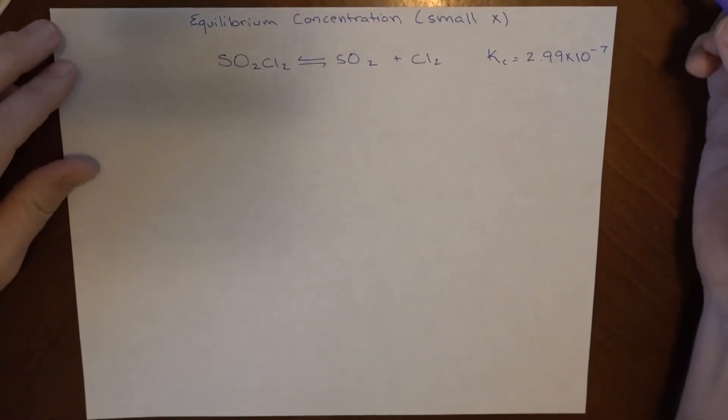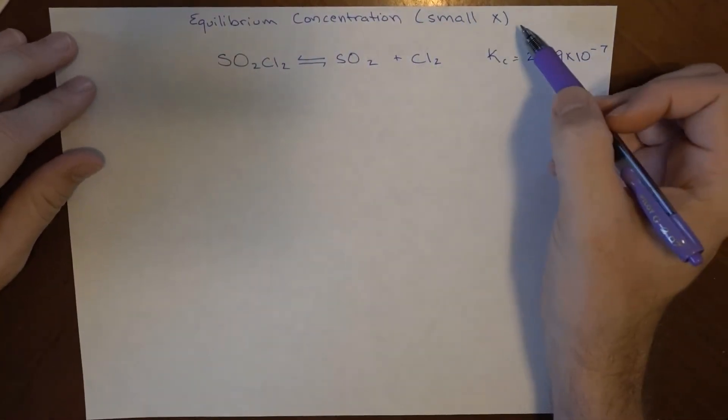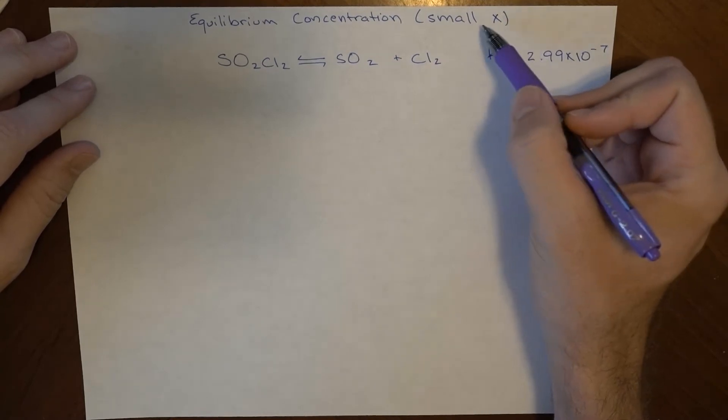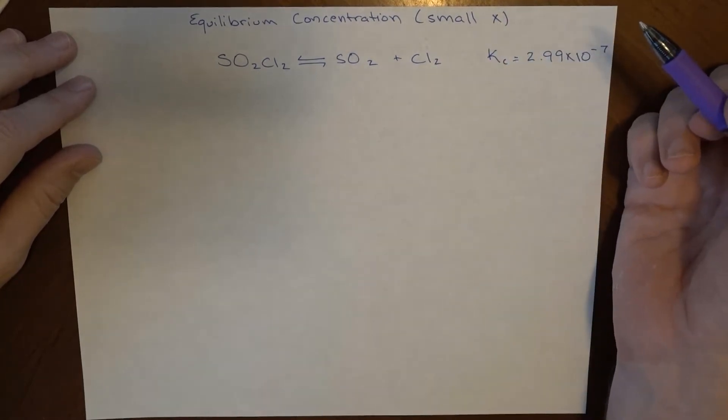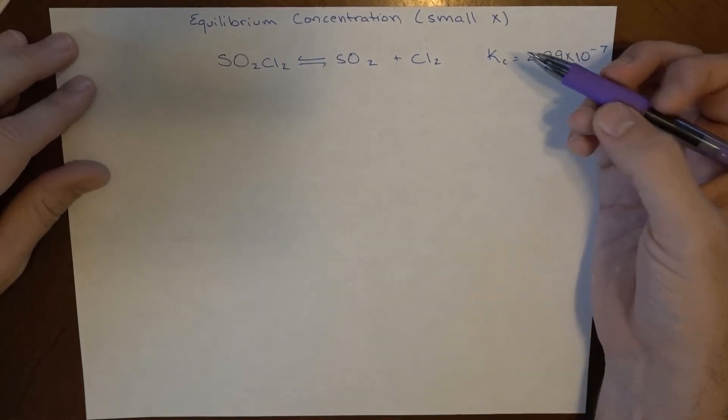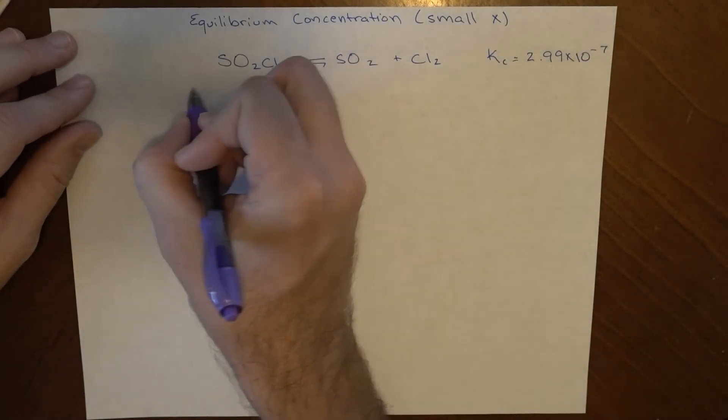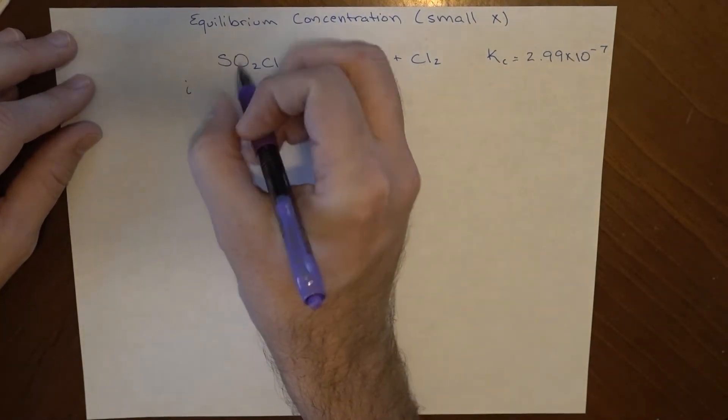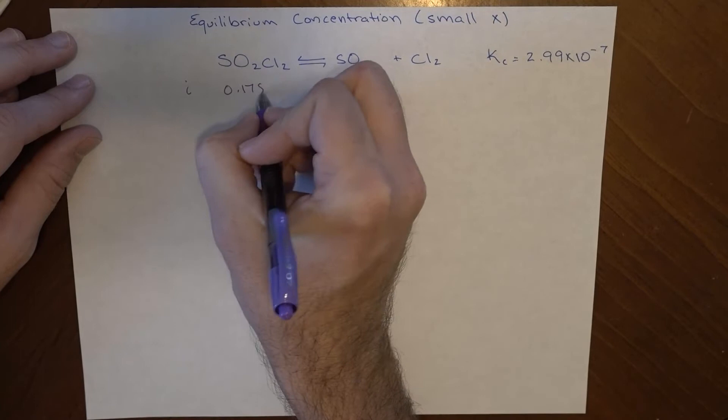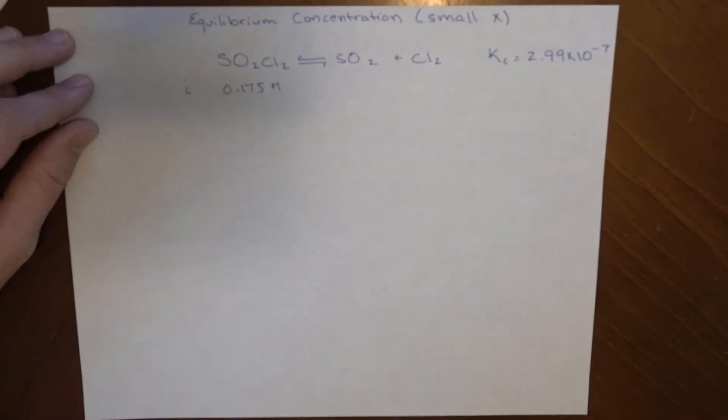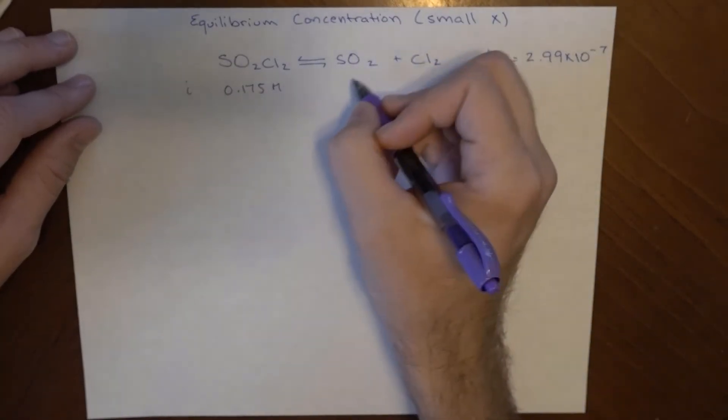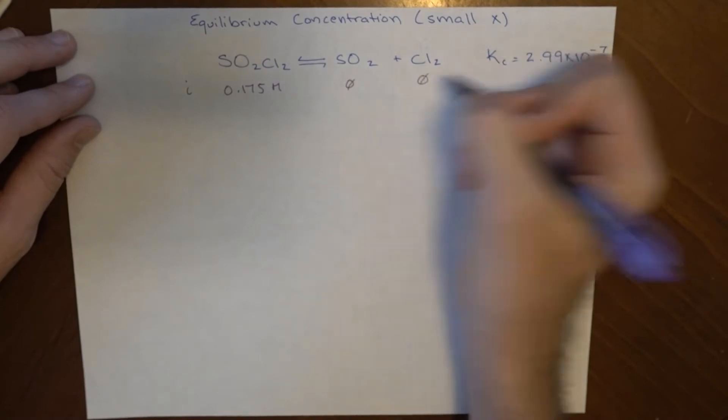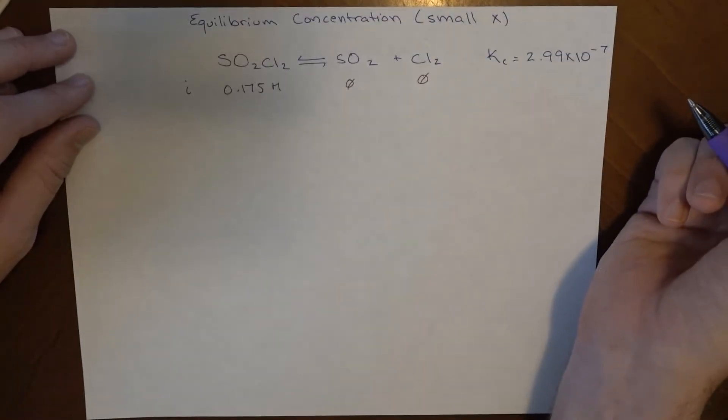This problem is going to walk through an equilibrium concentration with the small x approximation. We'll see what that means in a minute. But in this particular problem, we're going to start with an initial concentration of 0.175 molar SO2Cl2, and none of this and none of this. And we want to find what the equilibrium concentrations are.